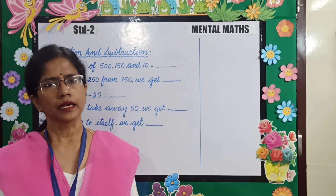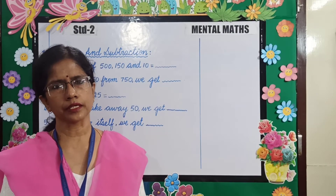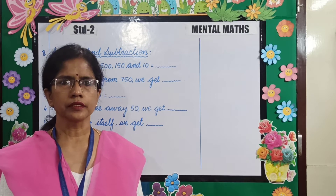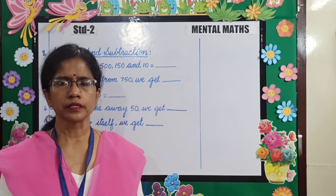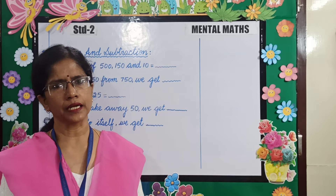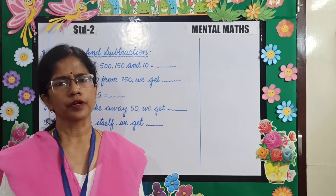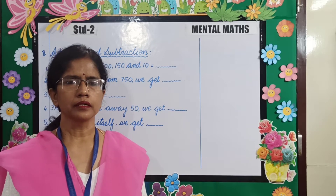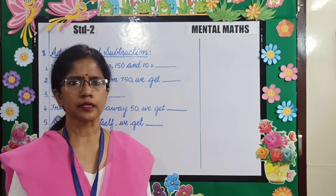Our next topic is addition and subtraction. Addition means the sum of 2 or more numbers, and subtraction is taking away one number from the other number. To understand better, let's do some examples.